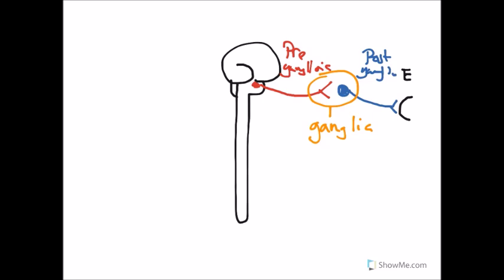The axons of the pre-ganglionic neurons, who are either in the brain or spinal cord, leave the spinal cord in the lateral grey horn. They go outward and synapse somewhere in a ganglia with the post-ganglionic cell. The axons are called fibers — the axon of the pre-ganglionic neuron is the pre-ganglionic fiber, and the axon of the post-ganglionic neuron is the post-ganglionic fiber. The ganglionic neuron, also called the post-ganglionic neuron, controls our visceral effectors.